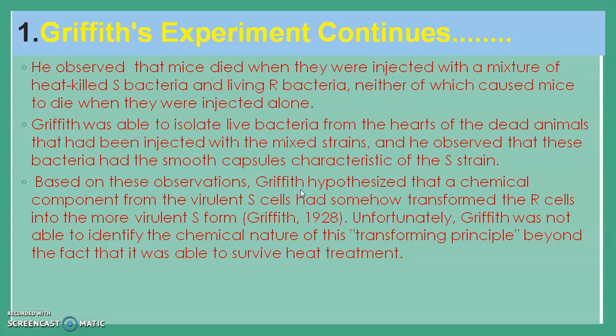In his experiment, Frederick Griffith injected a mixture of heat-killed S bacteria and living R bacteria. When he collected samples from the hearts of the dead animals, he isolated smooth (S) bacteria, which had the ability to cause pneumonia and to produce capsules. Based on these observations, Griffith assumed that a chemical component from the heat-killed virulent smooth cells had been transferred into the living R bacteria, converting them into pathogenic S bacteria.